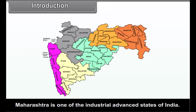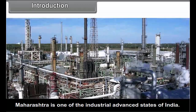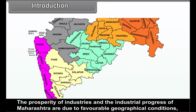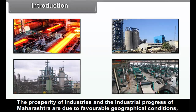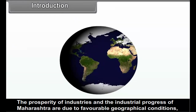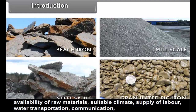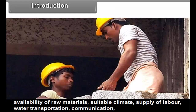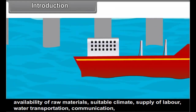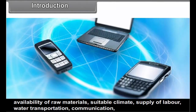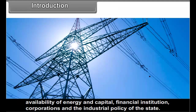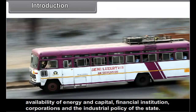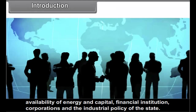Maharashtra is one of the industrially advanced states of India. The prosperity of industries and the industrial progress of Maharashtra are due to the favourable geographical conditions, availability of raw materials, suitable climate, supply of labour, water, transportation, communication, availability of energy and capital, financial institutions, corporations and the industrial policy of the state.